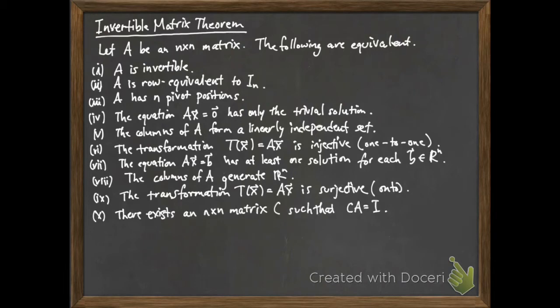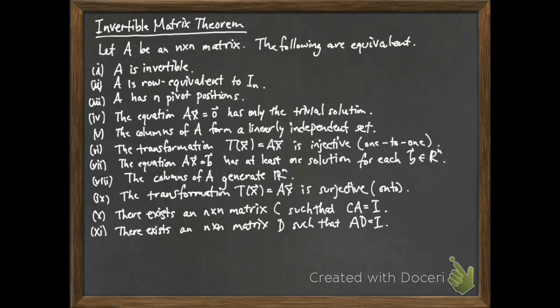Nine, the matrix transformation T of X equals AX is surjective. Ten, there exists a left inverse — an n by n matrix C that has the property that C times A equals the identity. Eleven, there exists a right inverse, an n by n matrix D such that A times D equals the identity. And finally, A transpose is invertible.